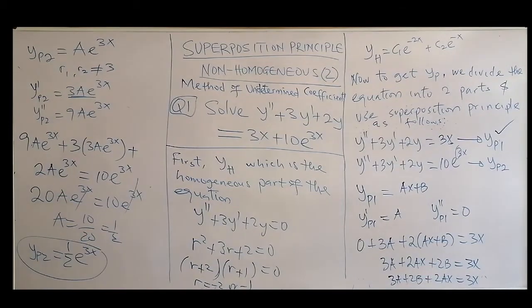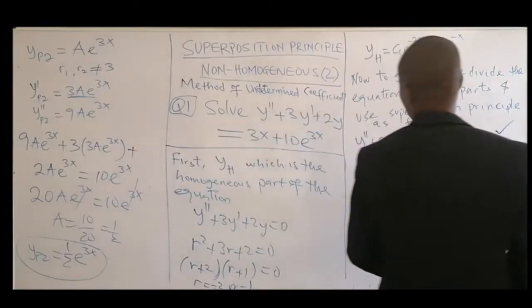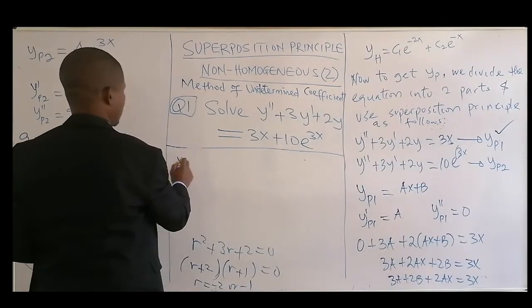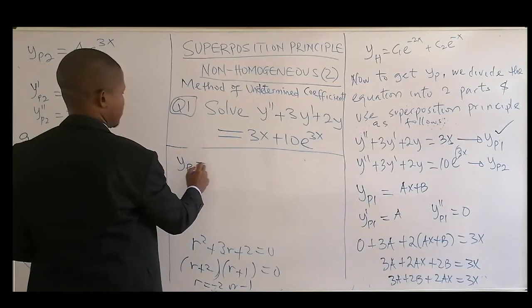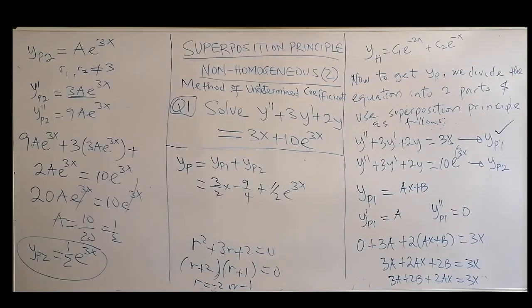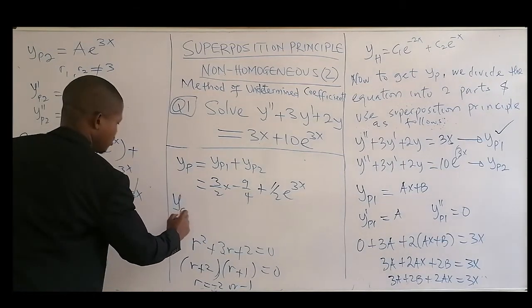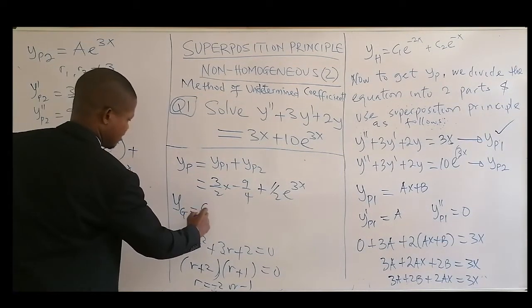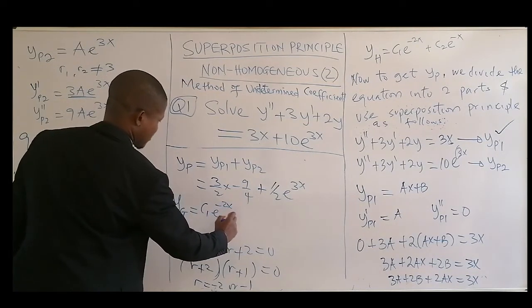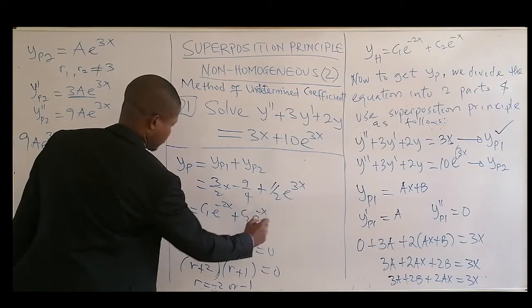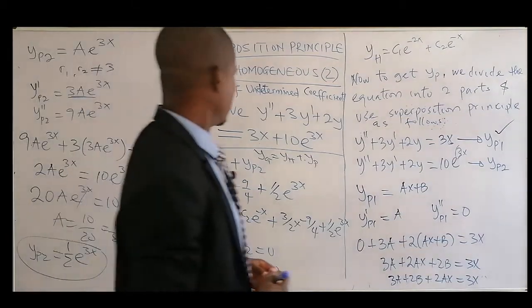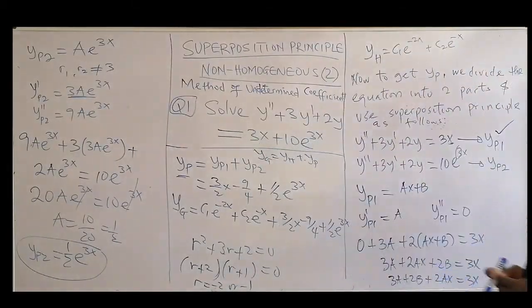Now we can combine or superimpose YP1 and YP2 together. So the particular solution now, YP equals YP1 added together with YP2. To get the general solution, Yg, it will be equal to the homogeneous part we have, C₁e^(-2x) + C₂e^(-x), then plus YP, which will be equal to the superposition principle of the non-homogeneous part.